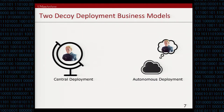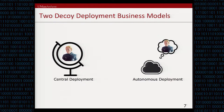We introduce two placement strategies for decoy routing systems. The first strategy is a central deployment and the second is an autonomous deployment. We perform the analysis separately for each of these decoy deployment strategies.